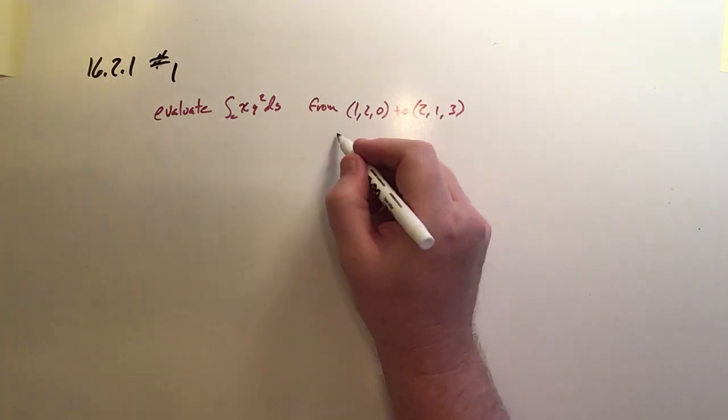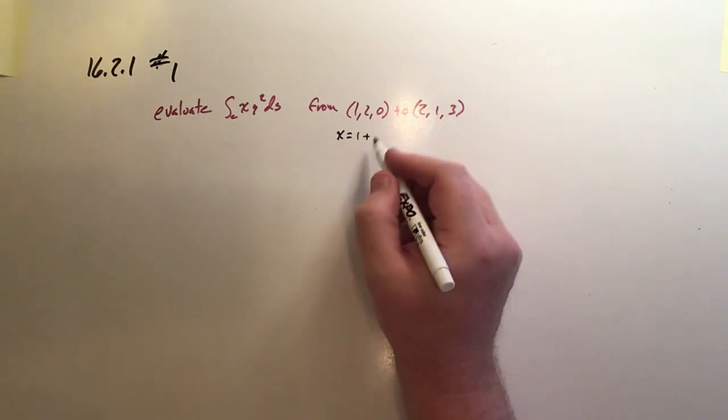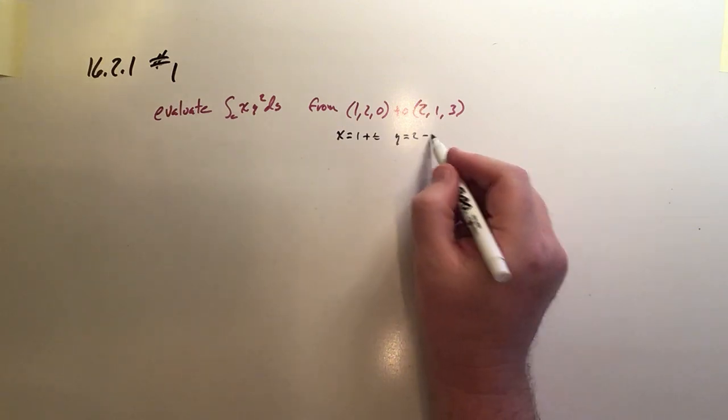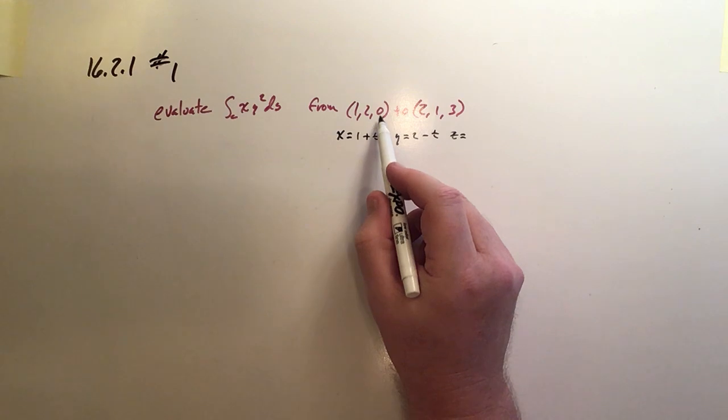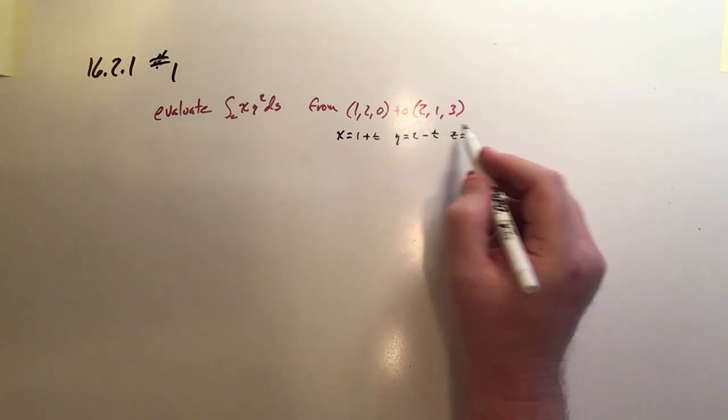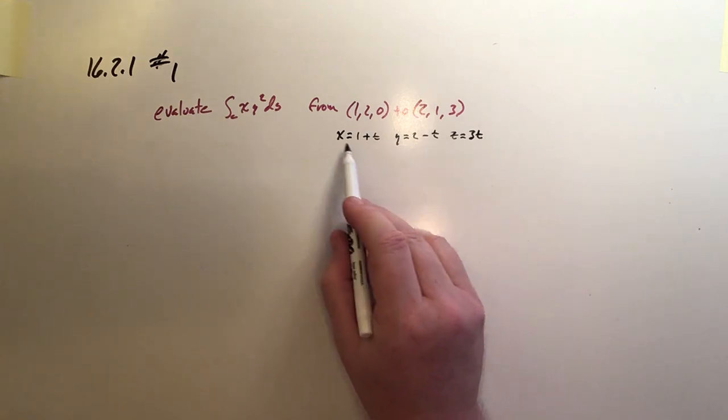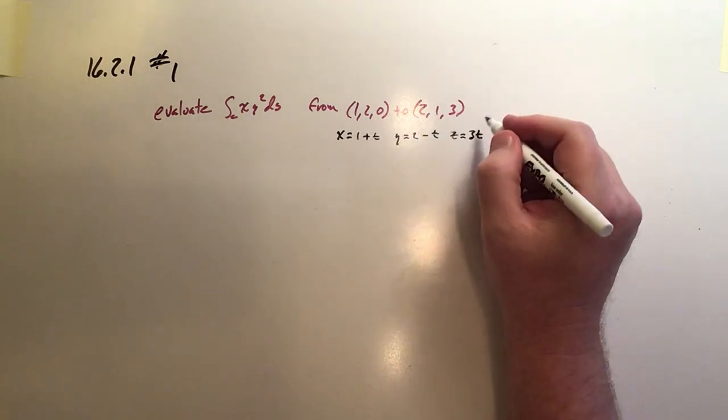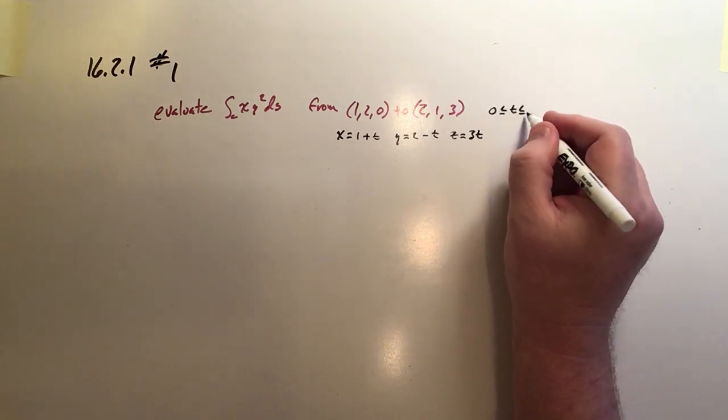So in terms of parameters, x is going to be equal to 1 plus t, y is going to be equal to 2 minus t, and z is going to be equal to 0 plus 3t. And again, this will then draw that segment between these two points as long as t ranges between 0 and 1.